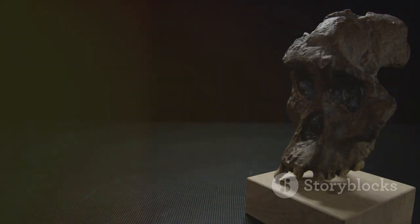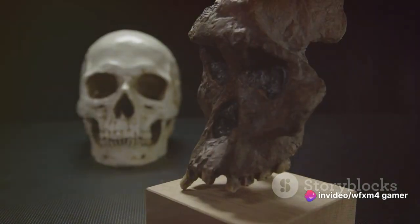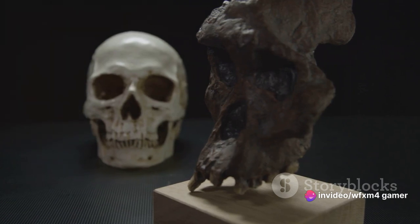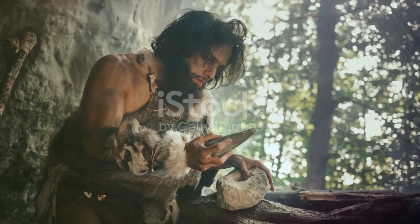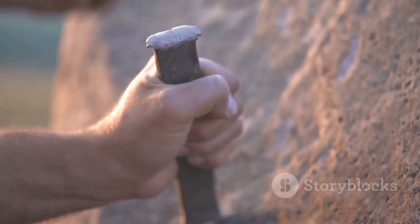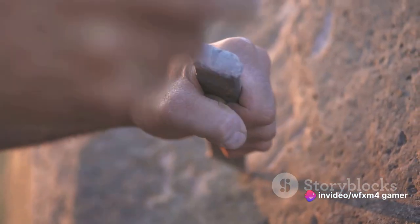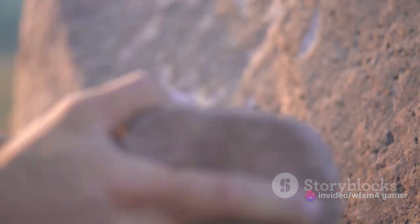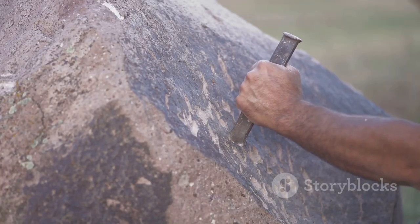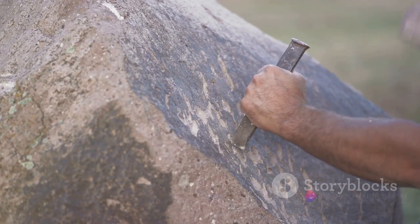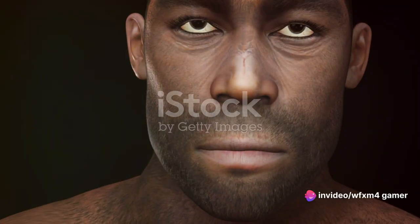This shift to bipedalism was a significant turning point. It freed up the hands, allowing these early hominids to interact with their environment in novel ways, and paved the way for another crucial development, the use of tools. Fast forward to around two million years ago, and we find the Homo habilis, the first of our ancestors to be dubbed Man. The Homo habilis were skilled toolmakers, fashioning sharp-edged stone flakes for cutting and scraping. This craft not only helped them to secure food, but also stimulated their cognitive development, resulting in larger, more complex brains.